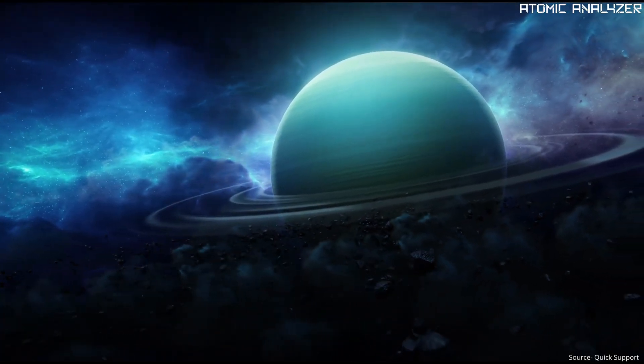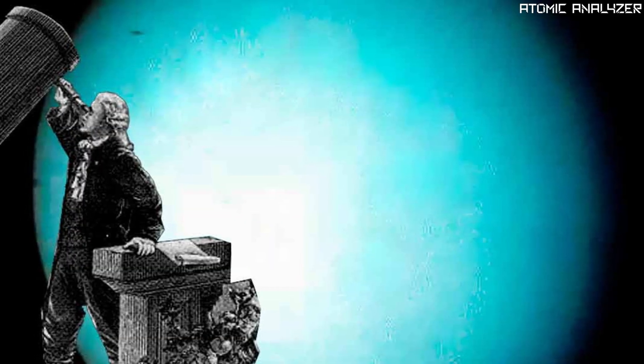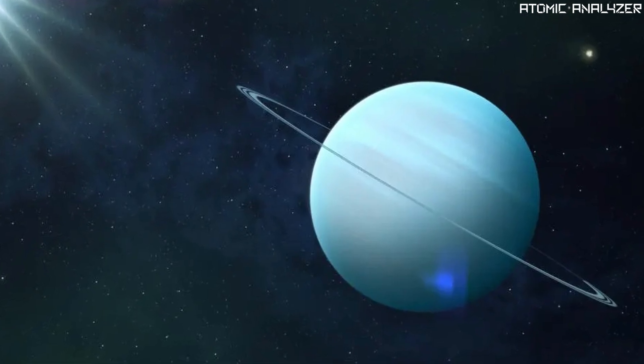Uranus was discovered in 1781 by the astronomer Sir William Herschel. Imagine being the first person to spot this distant planet in the night sky.